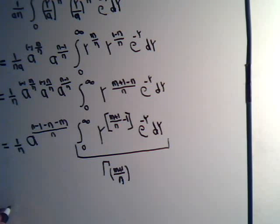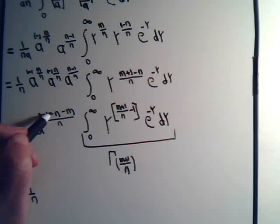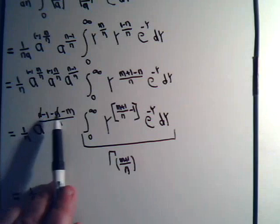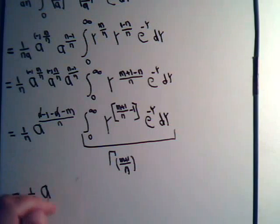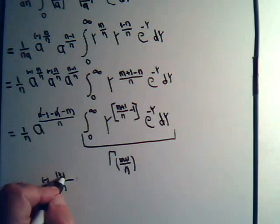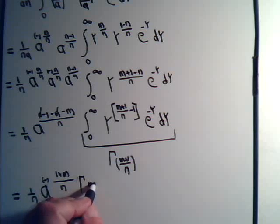Now let's look at this side. Here we have 1 over n, and here we have n minus 1 minus n minus m. The n's will cancel, so in the numerator we have minus 1 minus m. Let's write this as a to the minus 1 plus m over n. So finally, this times the integral is this times the gamma function of m plus 1 over n.